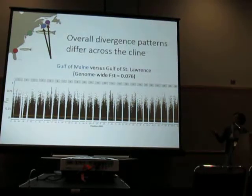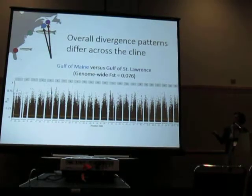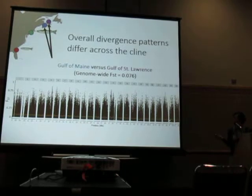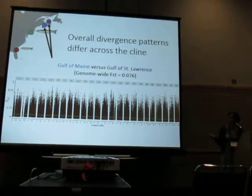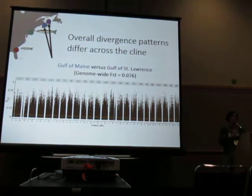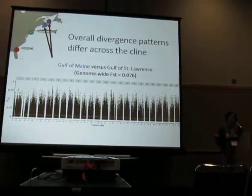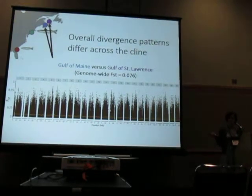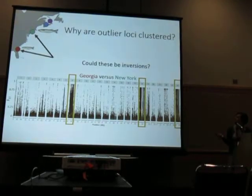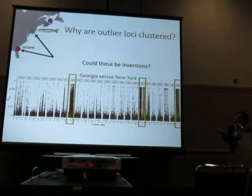Comparing the two most northern populations, Gulf of Maine and Gulf of St. Lawrence, we see the highest genome-wide FST, but no fixed SNPs and no really obvious signatures of non-synonymous enrichment.